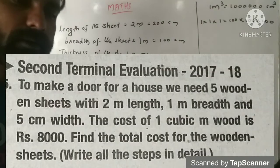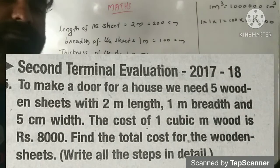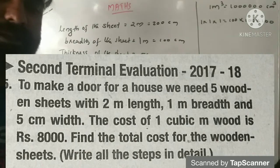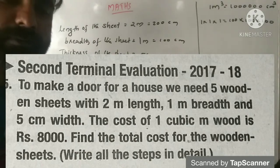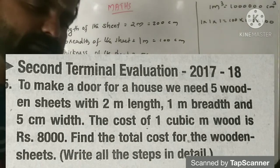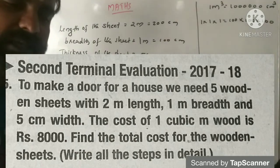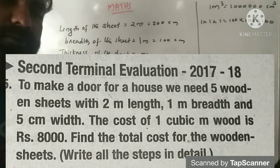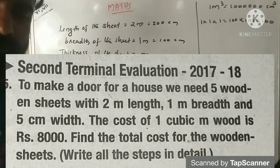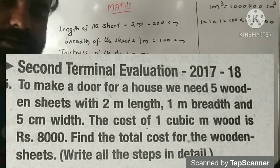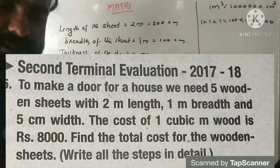To make a door for a house we need 5 wooden sheets with 2 meter length, 1 meter breadth, and 5 centimeter width. The cost of 1 cubic meter of wood is Rs. 8000. Find the total cost for the wooden sheets.